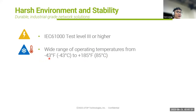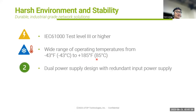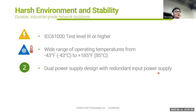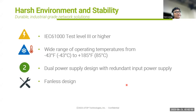We also talk about reliability. In some use cases, redundant features are very important. For example, dual power supply design is critical because downtime in industrial or OT operating environments is very expensive. When one power supply goes down, another comes back up. Fanless design is also important to ensure the device has a long lifespan — a fan design brings in dust that drastically cuts down lifespan.